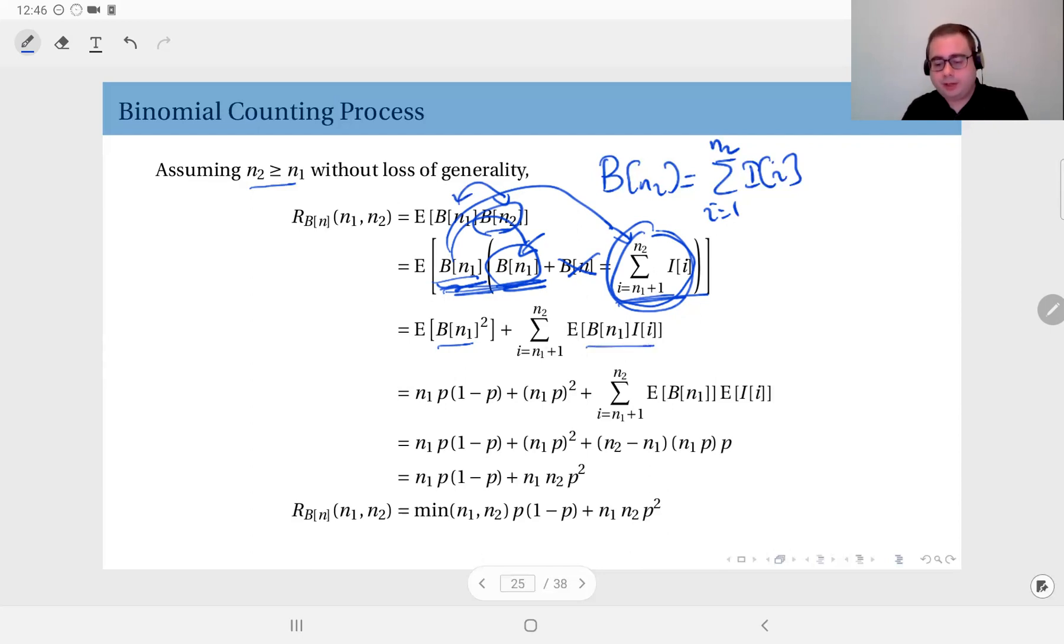Okay, and the sum I can take out of expectation, and inside I have expected value of b of n1 times i of i. But we know that this i value, the index is from n1 plus 1 up to n2, and therefore independent of b of n1. That is the great thing here. That means I can write this correlation as the product of means.